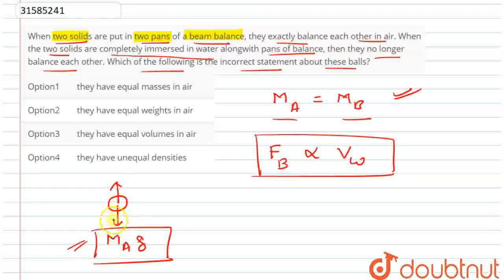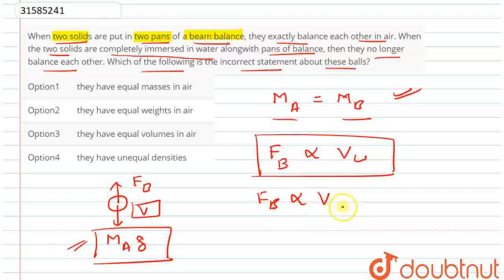The buoyant force depends on how much volume of water is displaced. Now, how much water will be displaced? The amount of volume. This buoyant force depends on the volume of the object. Now, the question has clearly said that it doesn't balance one another.